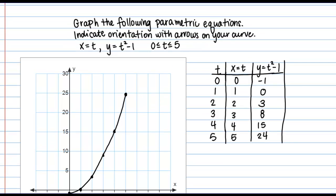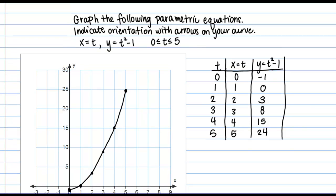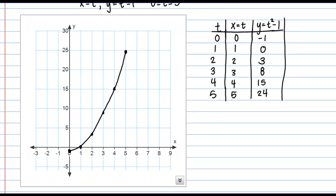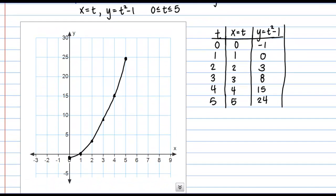Now, the other thing that we're instructed to do is to indicate the orientation with arrows on our curve. So parametric curves have what's called orientation or direction. And then the direction in which a parametric curve is generated as the parameter t increases is considered the positive orientation or the positive direction. And we often indicate this with arrows on the curve.